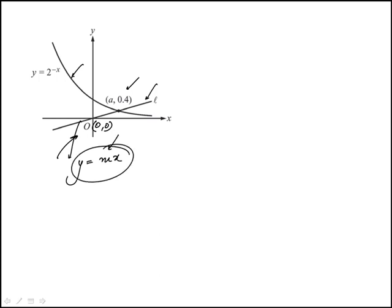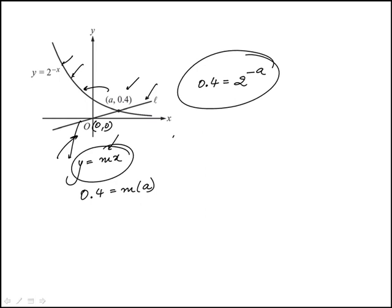At this point, when x is a, y is 0.4. The other thing we know is that this point falls on the curve, which means y is 0.4 when x is a. So we can find a from this and then plug that into our equation to find what m is.